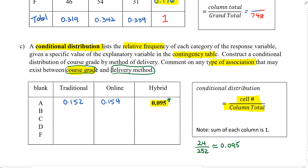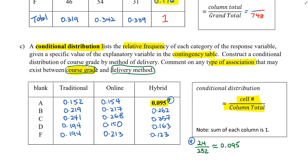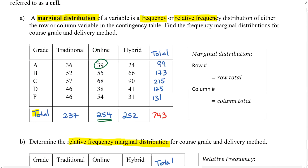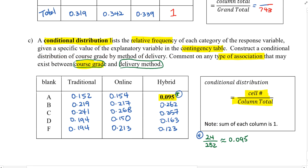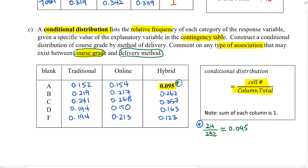Please pause the video and try to complete this table. To complete the table, each cell is divided by its respective column total. For example, 52 ÷ 237 ≈ 0.219 for the B row in the traditional class. That's how you get the number in each cell of the conditional distribution.